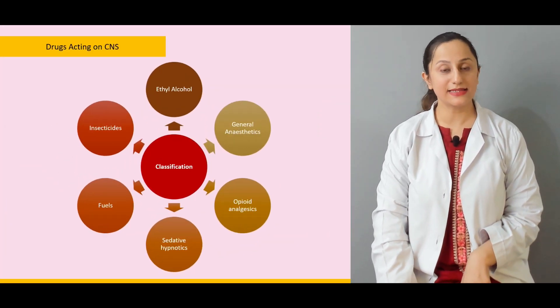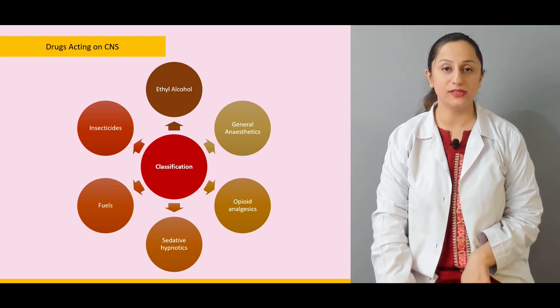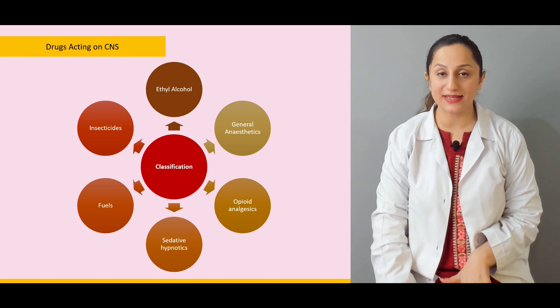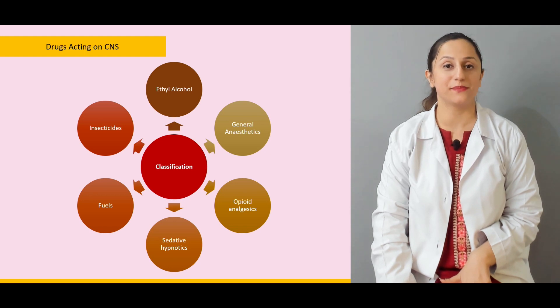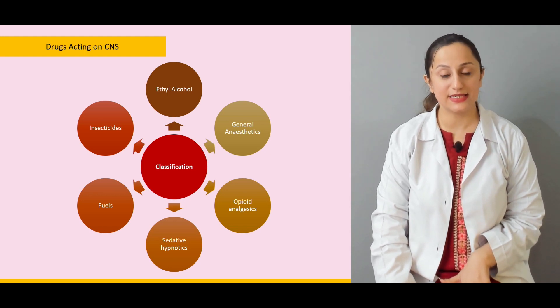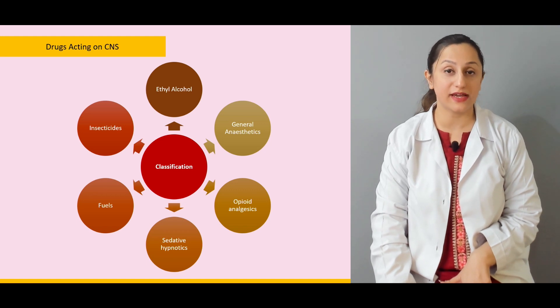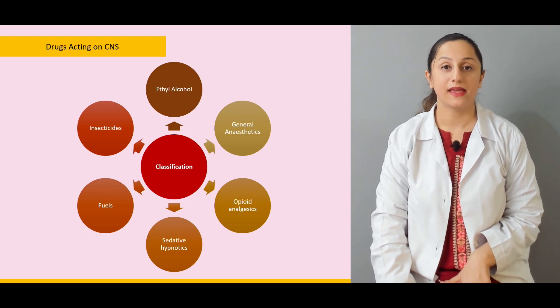The drugs acting on the CNS basically include ethyl alcohol, general anesthetics, opioid analgesics, sedatives, hypnotics, fuels, and insecticides, which can eventually have deleterious effects on the central nervous system. We'll be discussing the most important group, known as sedatives and hypnotics.